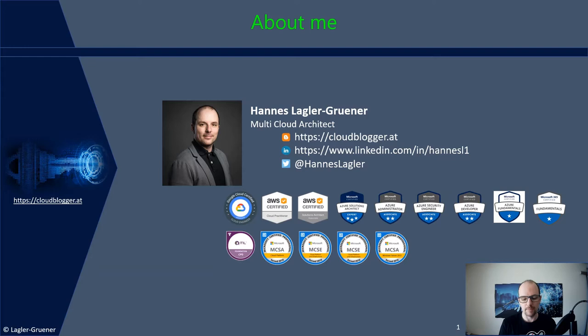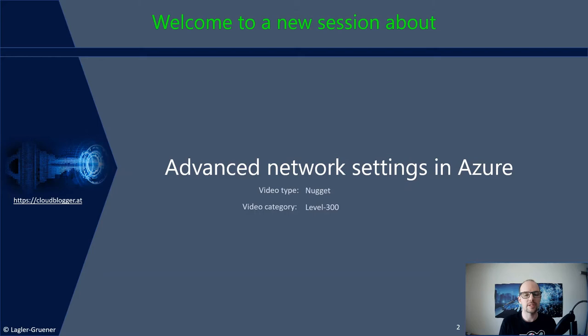Enough about me — let's start with today's agenda. Today we talk about advanced networking settings in Azure. My last session covered basic networking configuration: Microsoft virtual networks, security groups, application security groups, routing tables, public IP addresses. In this session I'll show you how to use and implement those components in your architecture. This session is Video Type Nugget, Video Category 300.